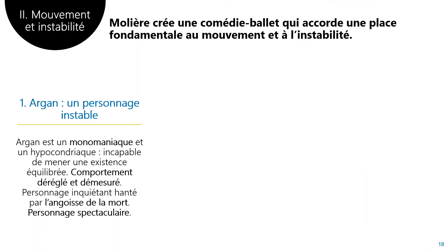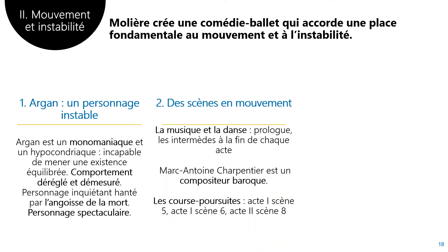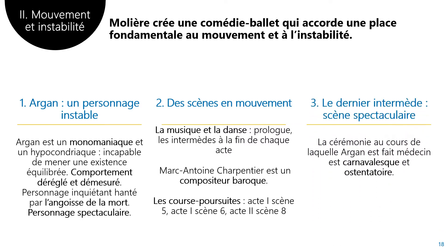D'autre part, comme dans les œuvres baroques, Molière accorde une grande place à l'instabilité et au mouvement. En effet, il crée des personnages instables : Argan a un comportement démesuré, déréglé. De plus, les courses poursuites, les bastonnades, les danses et la musique contribuent à créer des scènes dominées par le mouvement. Tout est en mouvement dans le malade imaginaire, à l'image du monde baroque. Enfin, on retrouve le goût baroque pour l'ostentatoire dans le troisième intermède qui est à la fois une scène de farce, un chant et une chorégraphie.